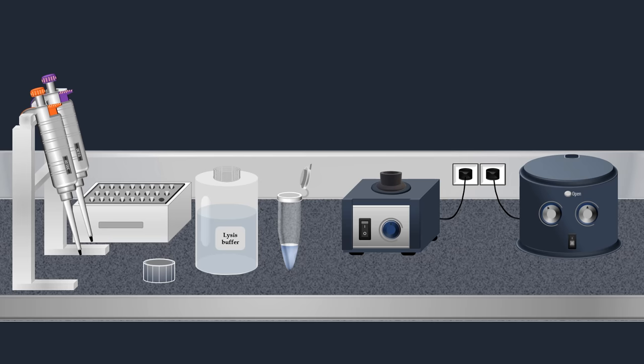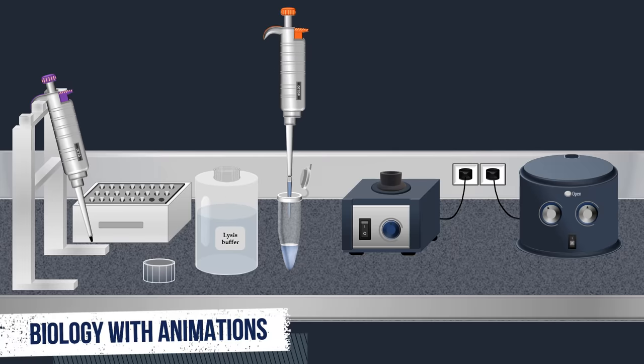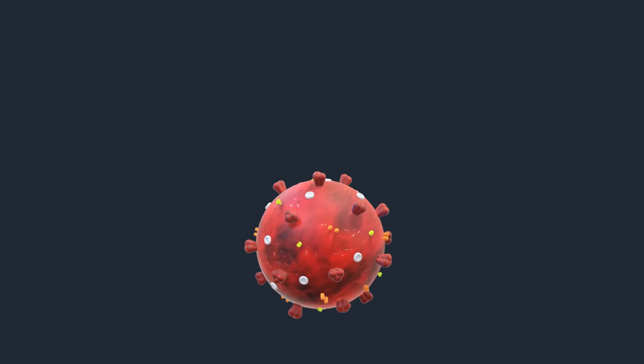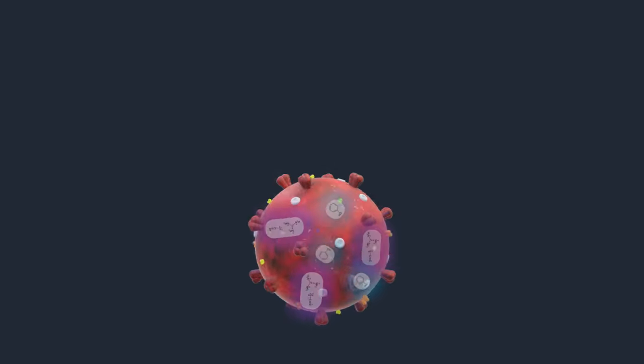Also, RNase inhibitors are usually present in the lysis buffer to ensure isolation of intact viral RNA. Once the lysis buffer is added, the tube is mixed by pulse vortexing and incubated at room temperature. Then the virus is lysed under the highly denaturing conditions provided by the lysis buffer.